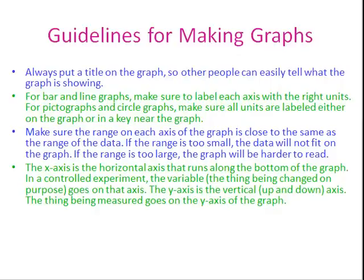The x-axis is the horizontal axis that runs along the bottom of the graph. In a controlled experiment, the variable — the thing being changed on purpose — goes on the x-axis. The y-axis is the vertical or up-and-down axis. The thing being measured goes on the y-axis of the graph.